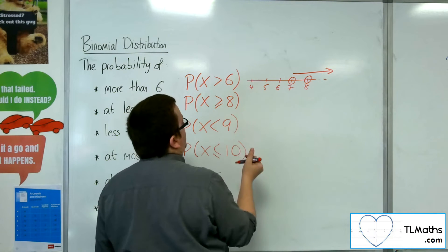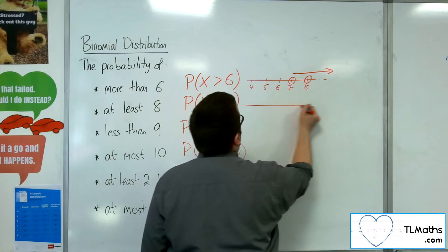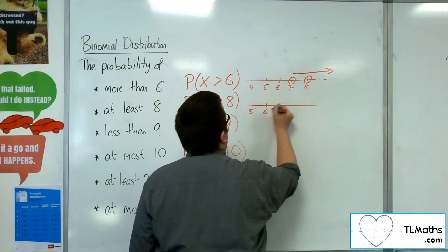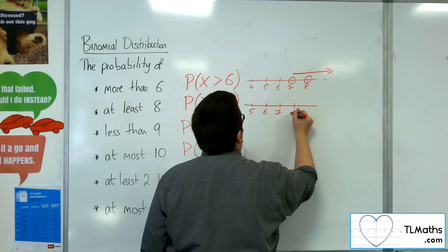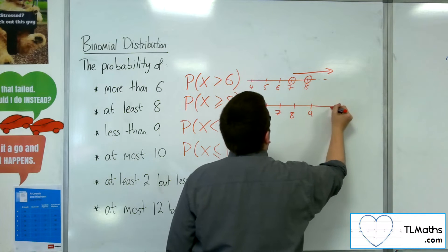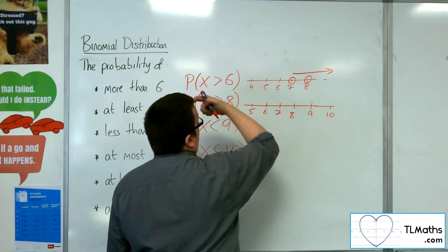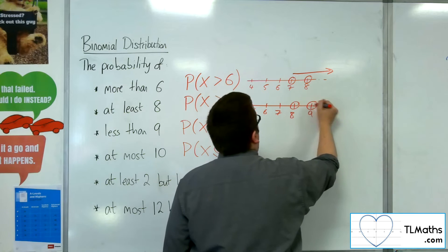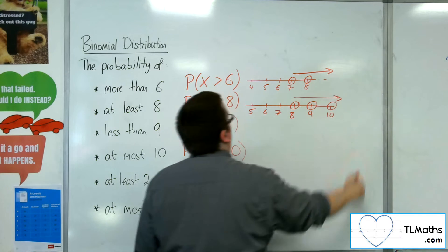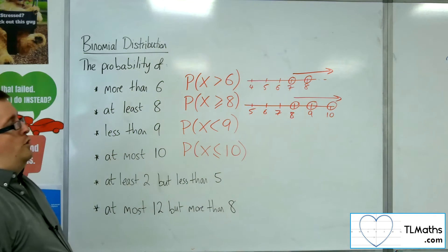If it's greater than or equal to 8, then on a number line, I'm going to want 8 or more. So for at least 8.